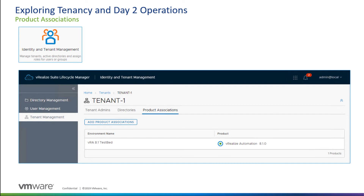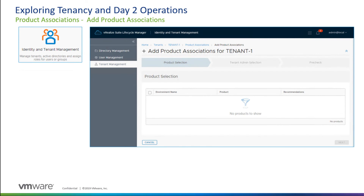The final tab is Product Association. It shows which products this tenant is associated with today. If you've built another environment and registered it with LCM, you can click Add Product Association to give tenant-1 access to that environment. Since LCM in our scenario only has one VRA instance already associated with this tenant, it appears in the list.